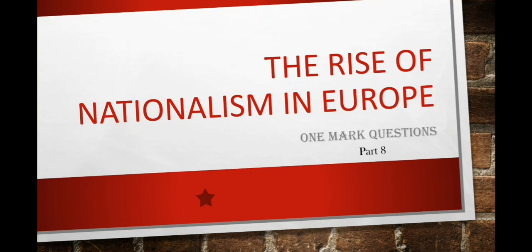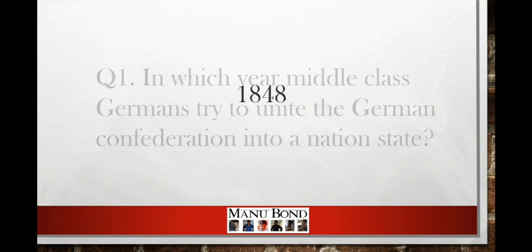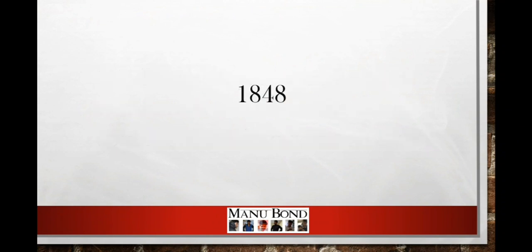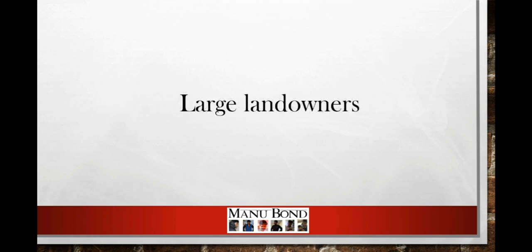Hi, hello learners. The Rise of Nationalism in Europe. One more questions, part 8. Question number 1: In which year did middle class Germans try to unite the German Confederation into a nation state? Answer: 1848. Question number 2: Who are called Junkers? Answer: Large landowners.